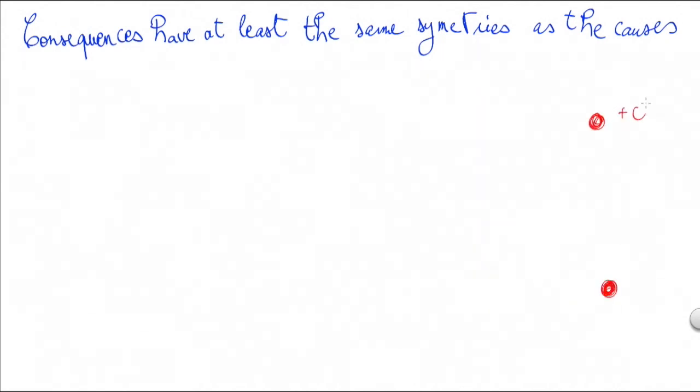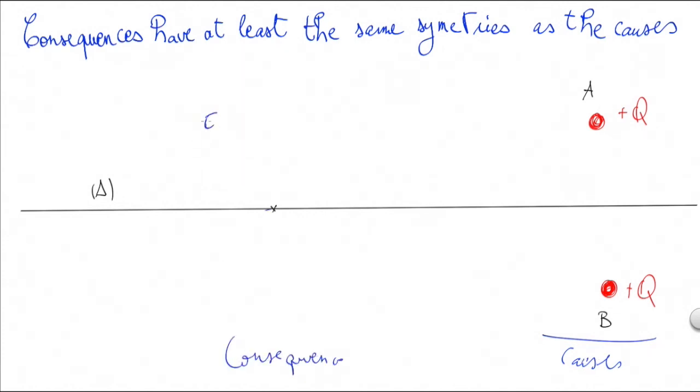Let's say we have two charged balls with the same charge q, and that we are interested in the electric field they create in some point in the axis of symmetry. Let's name this ball A and this one B. So these are the causes, the presence of two charged balls in the space. The consequence would be the creation of some electric field here.